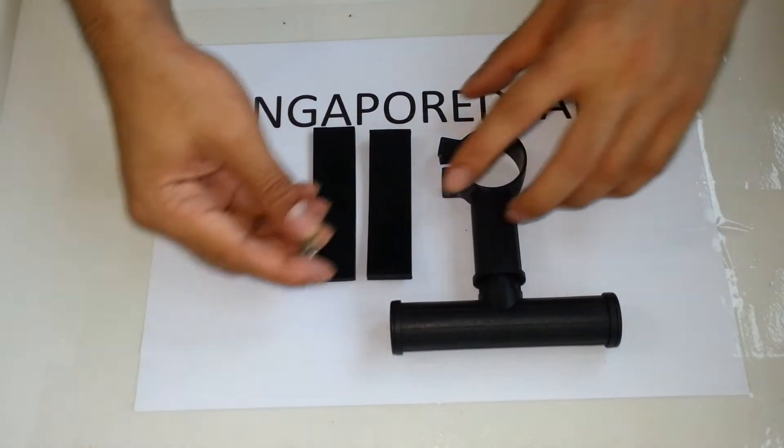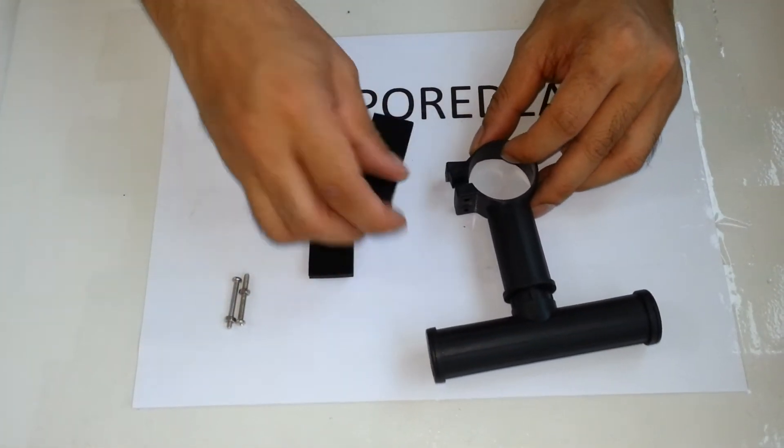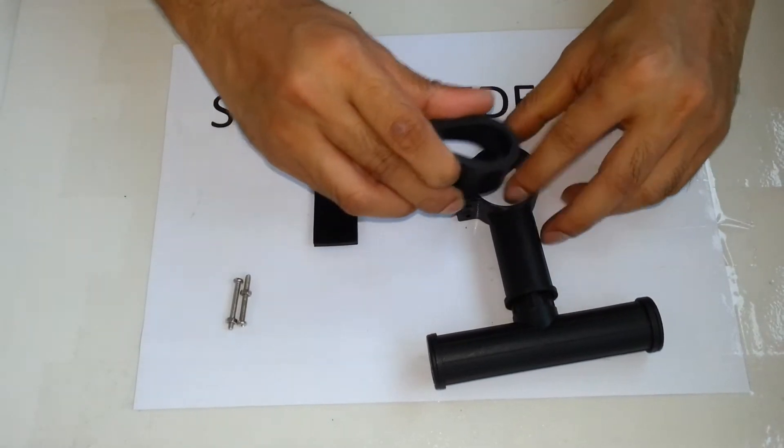There are screws and nuts here. It goes right in here. And these rubber parts that go into the hole that you see here.